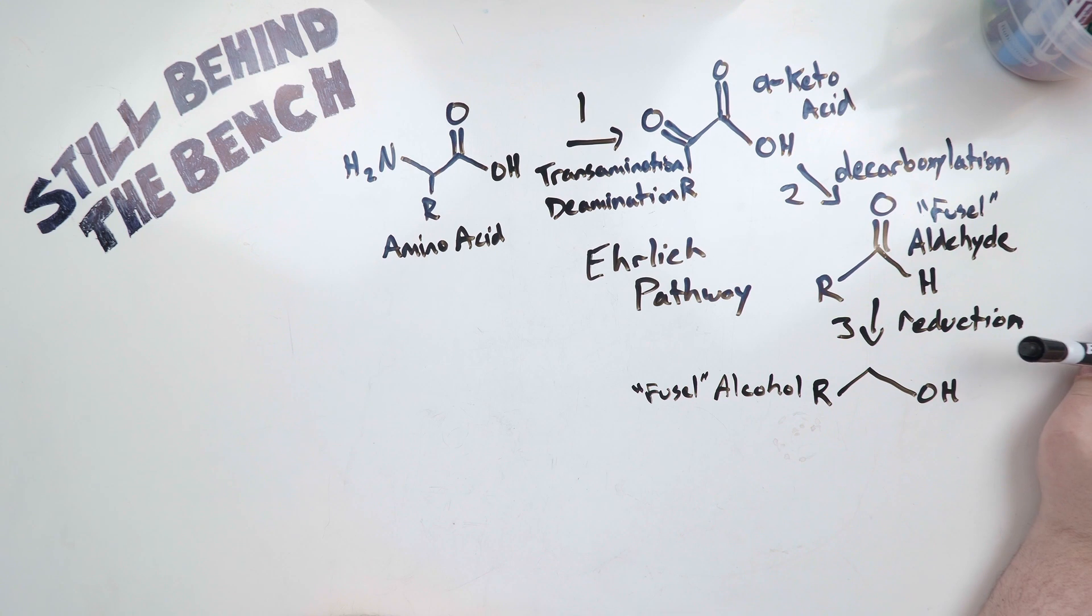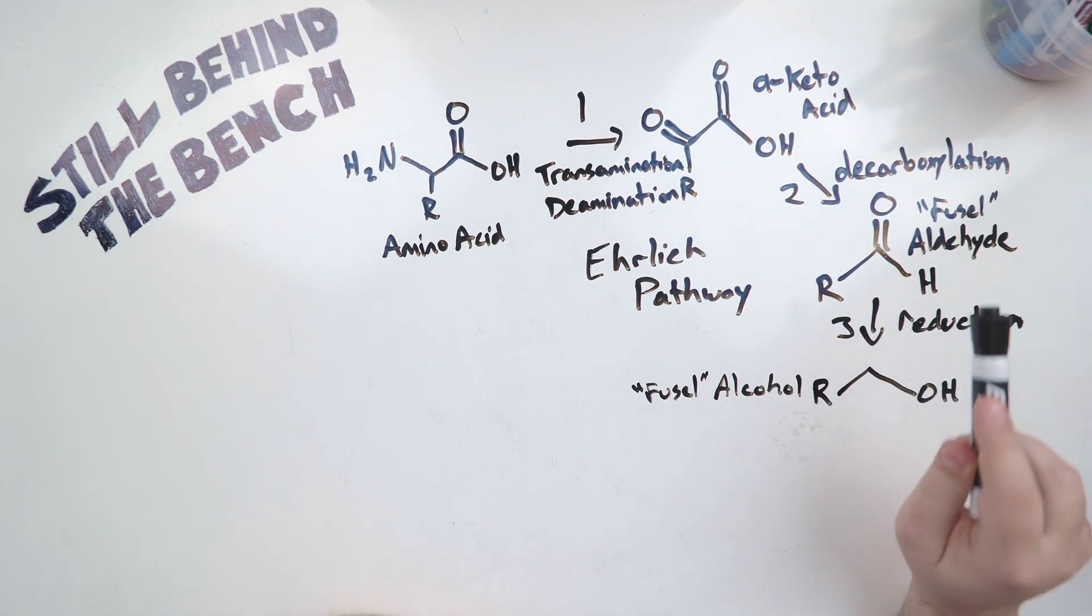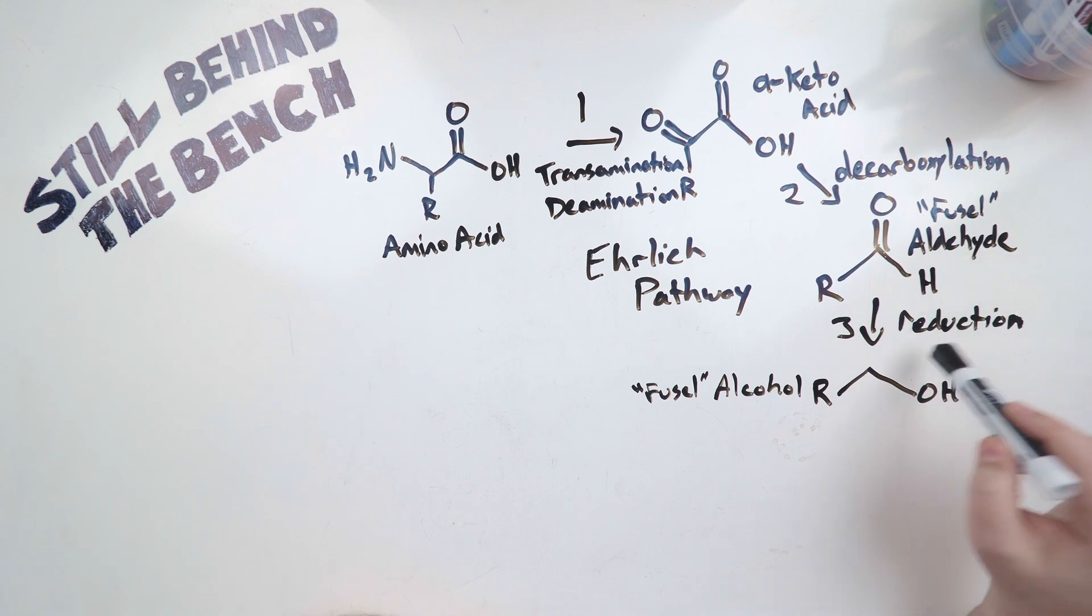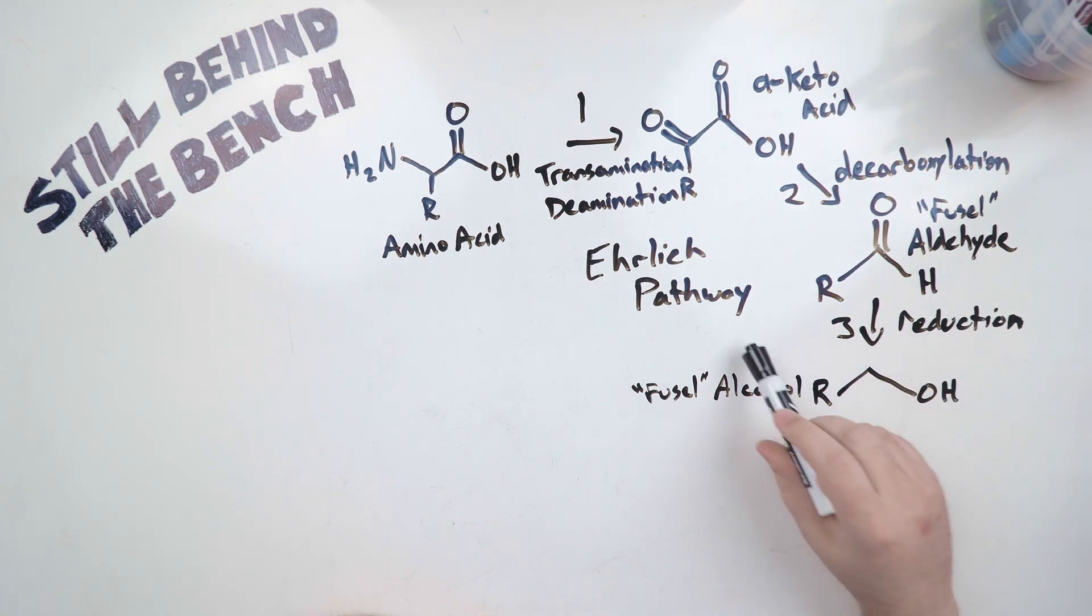And then the next step, the third step, it can go one of two ways based on whether or not there's oxygen present. If there is oxygen present, a specific enzyme will take this aldehyde and do an oxidation reaction and you get a fusel acid instead. I'm going to talk more about fusel acids in a subsequent video. If there's no oxygen present, enzymes will do a reduction reaction and you end up with our fusel alcohol.